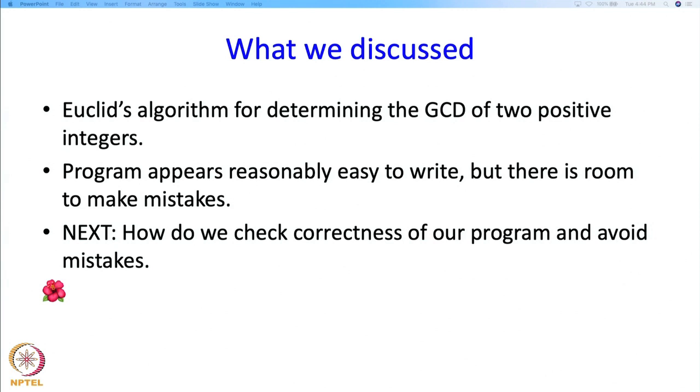So what did we discuss in this segment? We discussed Euclid's algorithm for determining the GCD of 2 positive integers. And we said that the program appears easy to write, but there is room to make mistakes. And in the next segment, we will check for correctness of our program and make sure that we have not made any mistakes. We will stop here.